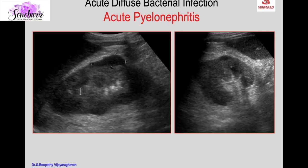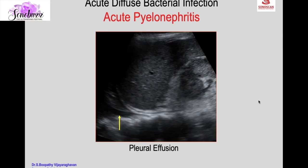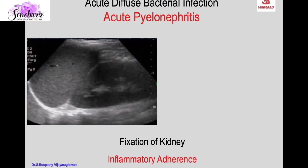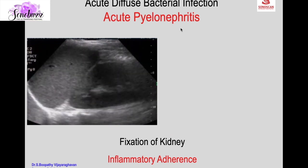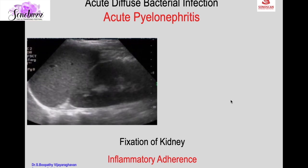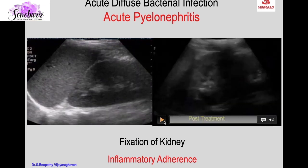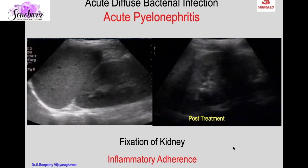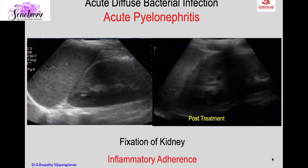Another feature of acute pyelonephritis is subcapsular perinephric fluid and echogenic perinephric fat. There may be ipsilateral pleural fluid as a sign of infection. On real-time scan, fixation of the kidney can be observed — the spleen moves over the kidney but the left kidney is fixed due to inflammatory adherence. After treatment, the left kidney and spleen move together, confirming that fixation is a feature of acute pyelonephritis on real-time scanning.